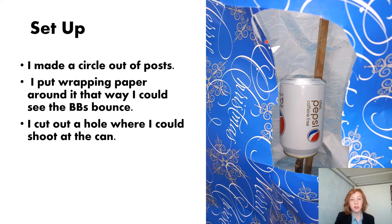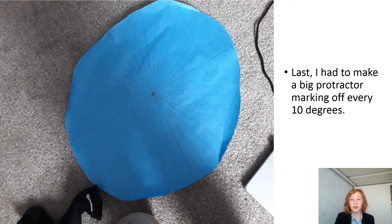How I set up was I made a sort of circle at a post, and then I put wrapping paper around it. The reason I put wrapping paper around it is that way I'll be able to see whenever the BBs shoot off, I'll be able to see a hole in the wrapping paper. That'll tell me where the BB ricocheted. I made a big protractor for it every 10 degrees.